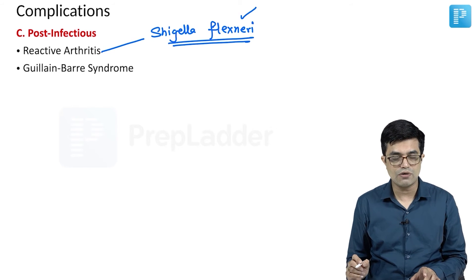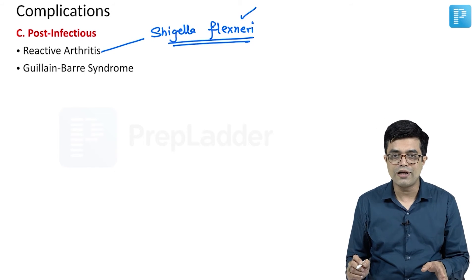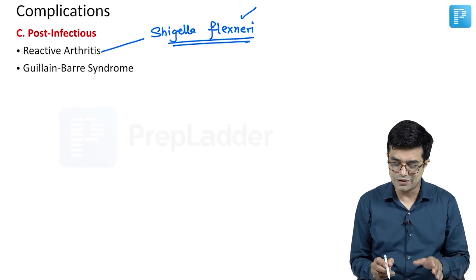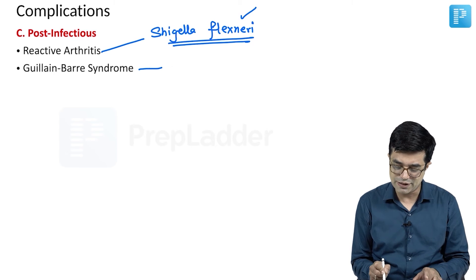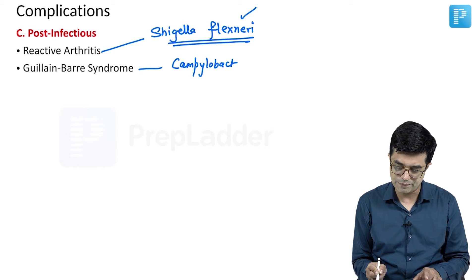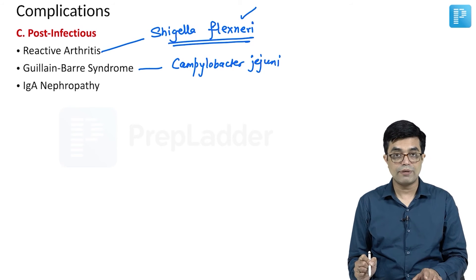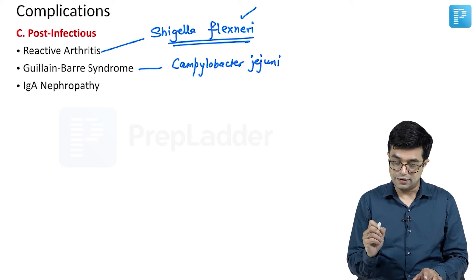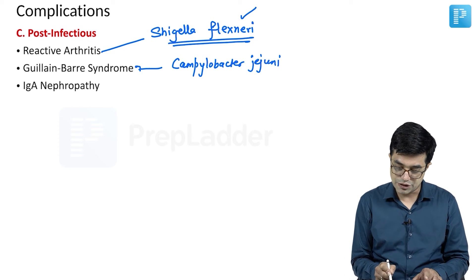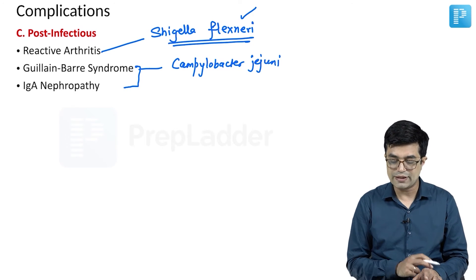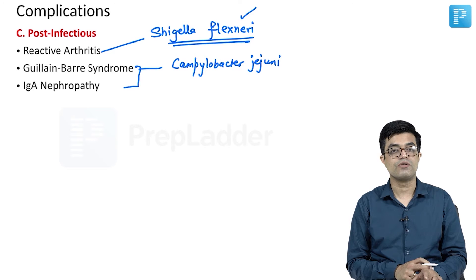Then we have Guillain-Barré syndrome, which is typically associated with Campylobacter jejuni. Then we have IgA nephropathy, again strongly associated with Campylobacter jejuni.